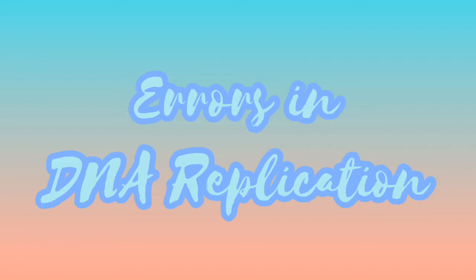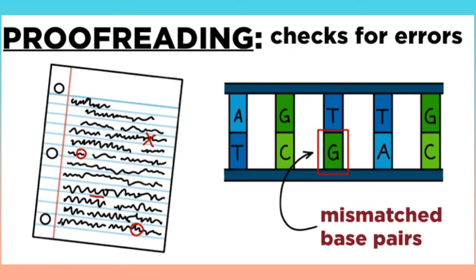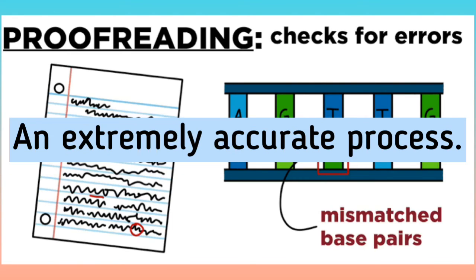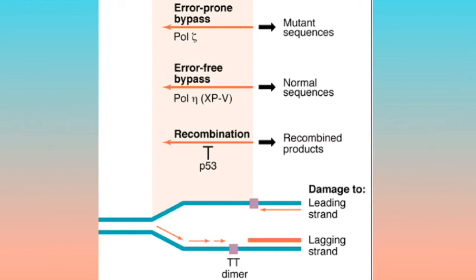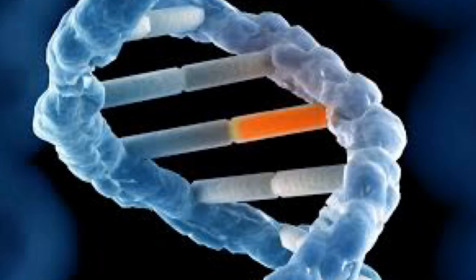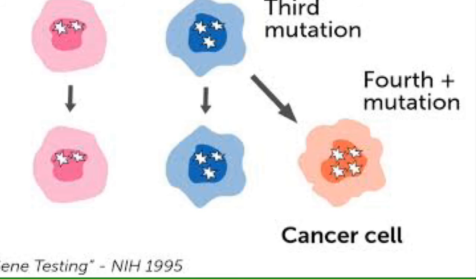Errors in DNA replication: In the initial pairing of bases with a template DNA strand, there is around one error for every 100,000 nucleotides paired. Polymerase enzymes proofread the new strands of DNA against the template strand and fix errors. This fixing reduces errors to around one error for every 10,000,000,000 nucleotides — an extremely accurate process. The 1 in 10 billion errors occur when a polymerase incorrectly replaces the error with another incorrect nucleotide. These rare errors are the cause of genetic mutations and cancer.